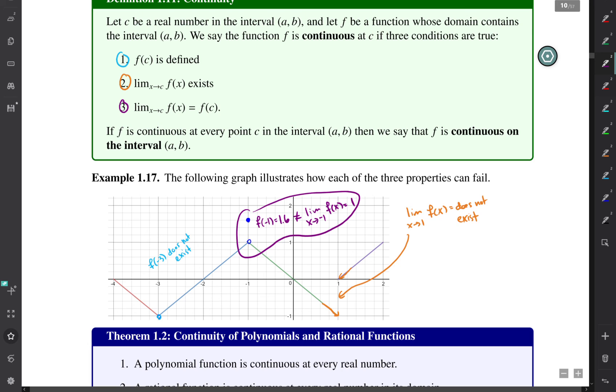It's where the value of the function doesn't equal the limit. Type one is where the function is not defined at that particular point. And type two is where the limit doesn't exist because there's some type of jump discontinuity.